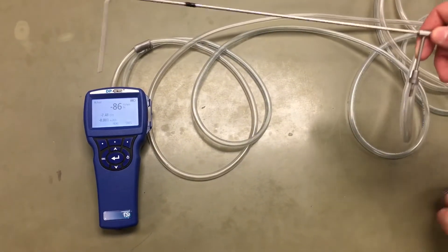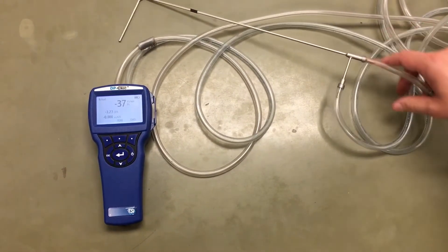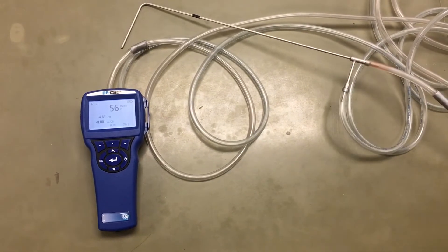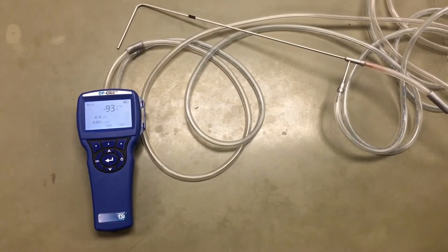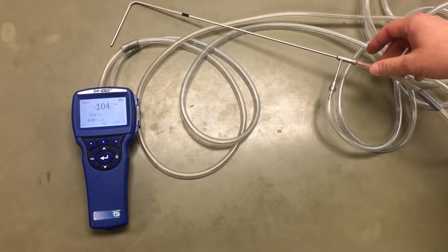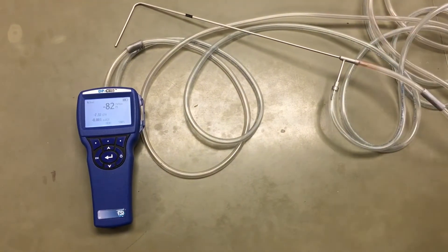We're going to be using a TSI-DP calc to measure air flow velocity, total air flow rate and volume per minute in cubic feet per minute.